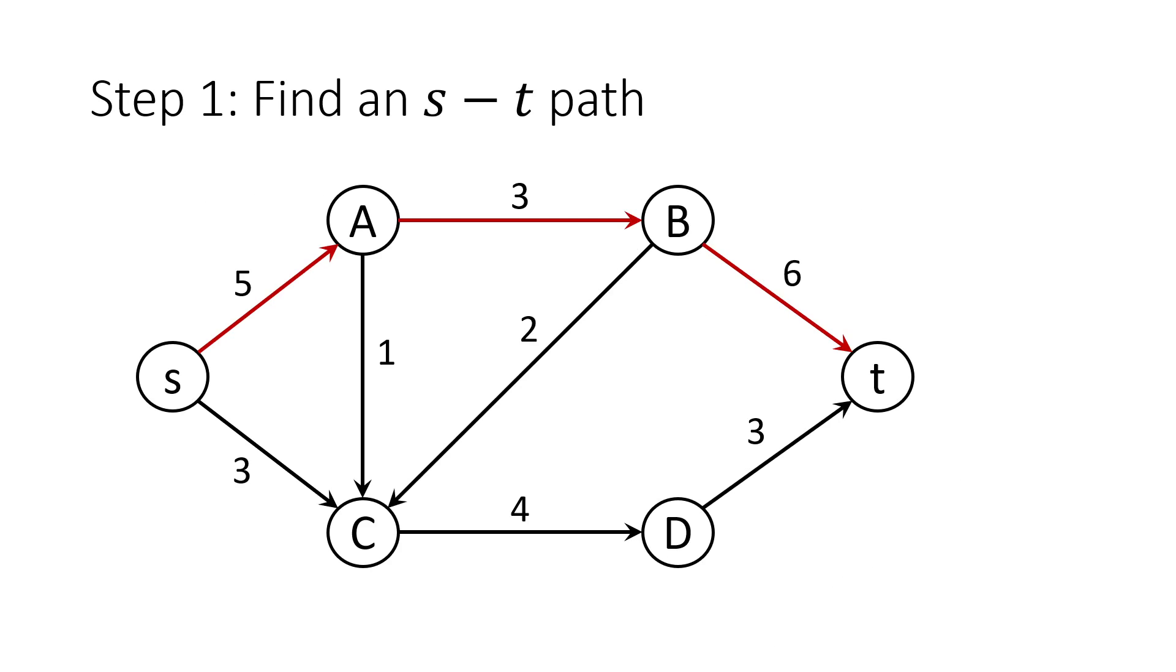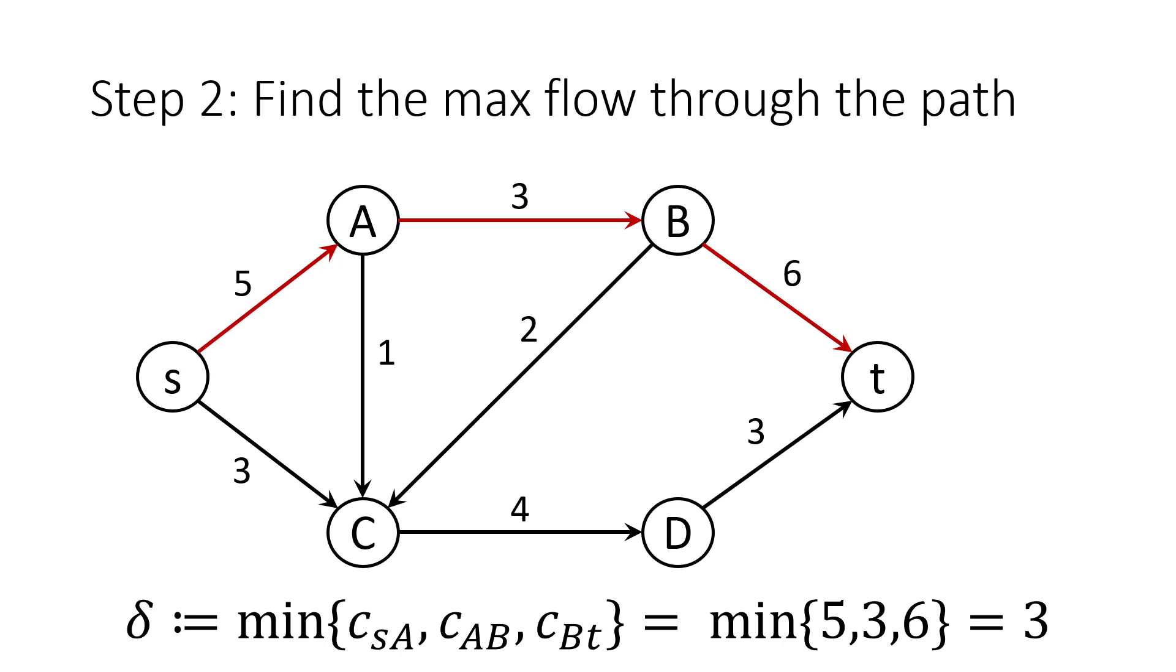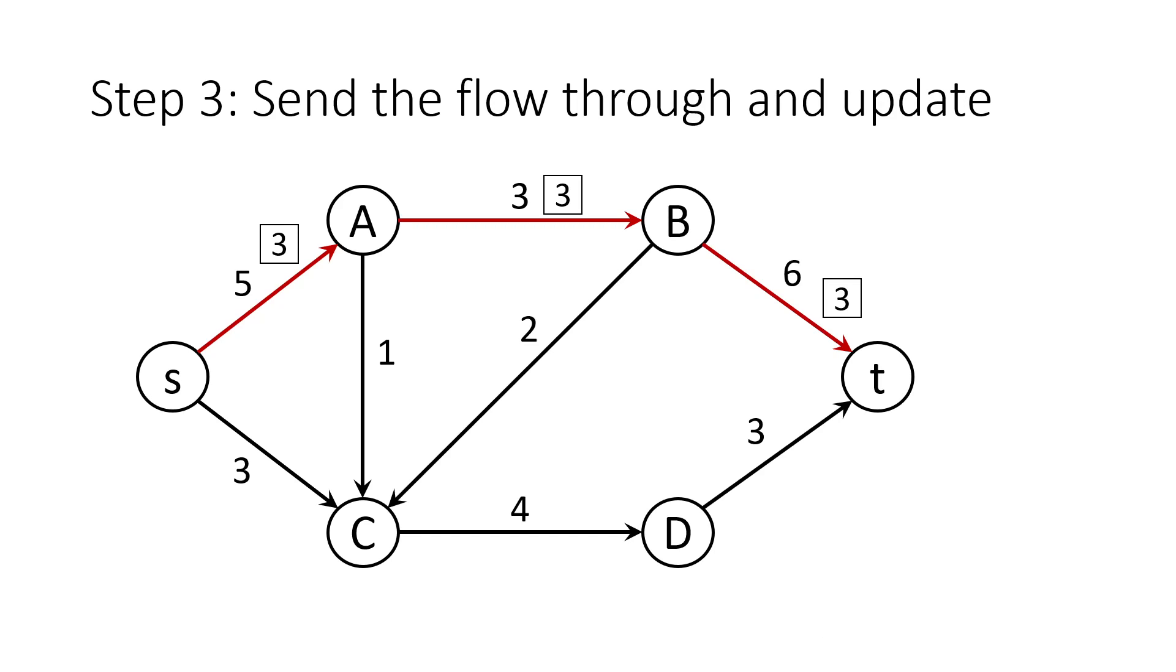Starting off, we find an ST path. This is highlighted in red. Now, we find the maximum flow through the path. This is simply the minimum of all the capacities over the edges from S to A, A to B, and B to T. For this path, it's 3. So, we send the flow of 3 through and update our graph. The flow through an edge is boxed as shown.